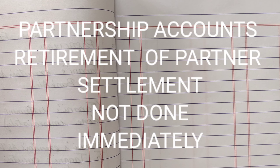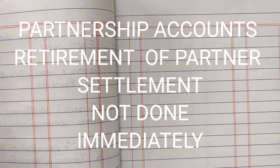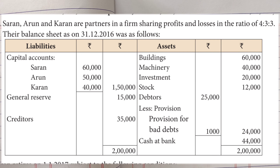Let's have a look at a sum where it is partnership retirement and the retiring partner is not paid immediately. We're going to deal with goodwill in this sum. The sum goes: Saran, Aron, and Karan are partners in a firm sharing profits and losses in the ratio 4:3:3 — this is the profit sharing ratio.